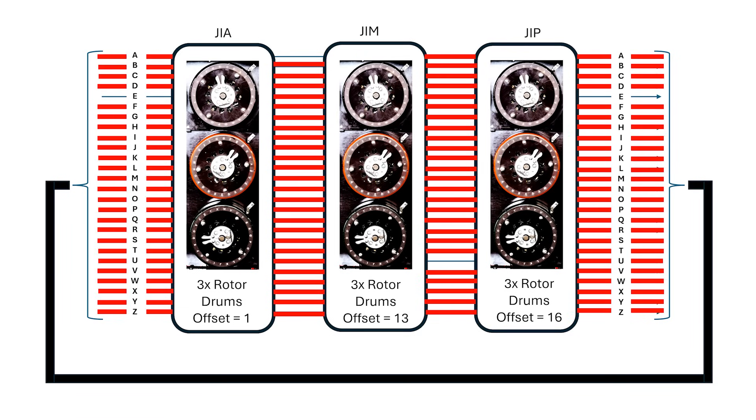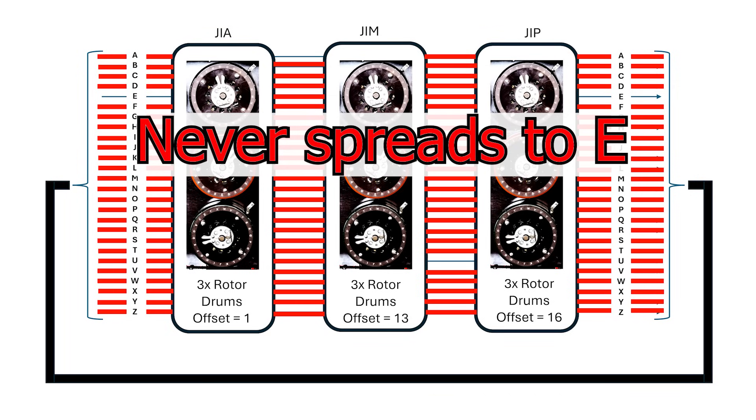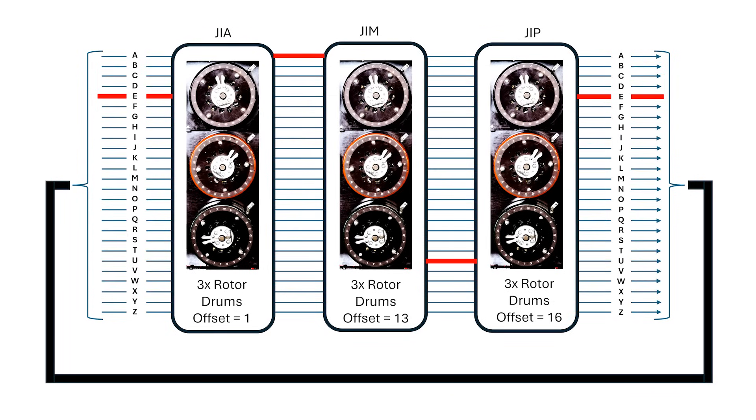This E pathway is independent from all other pathway connections running through the machine. So it doesn't actually matter which wire you apply voltage to.